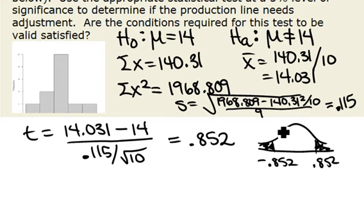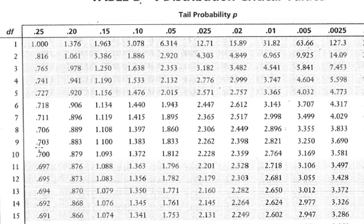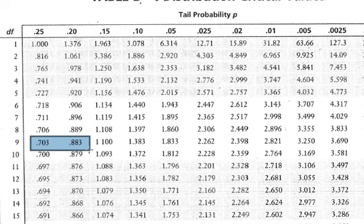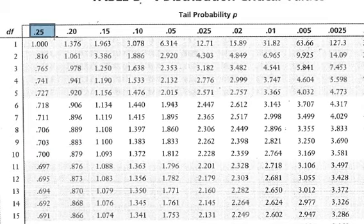We go look for 0.852 in row 9 because our degrees of freedom is n minus 1, which gives us 9. So 0.852 in row 9 of our table, we see it's bounded between 0.25 and 0.2, from 0.703 and 0.883. So we have tail areas of 0.25 and 0.2.